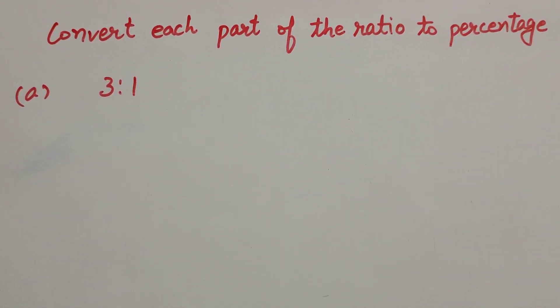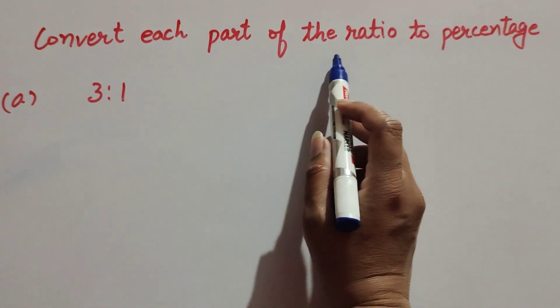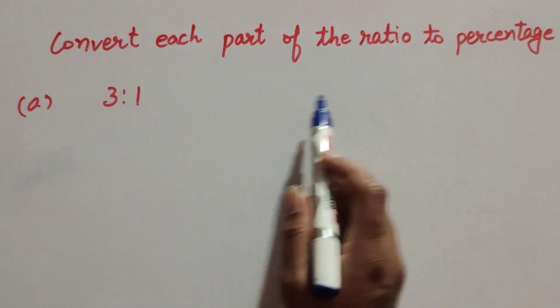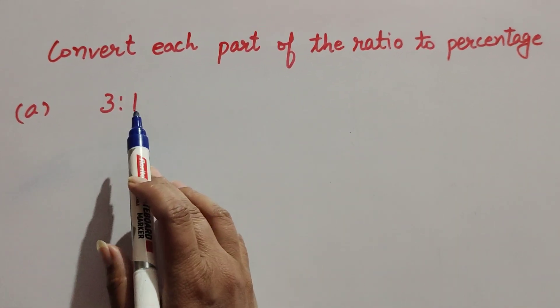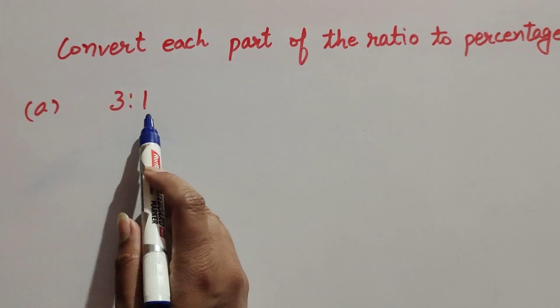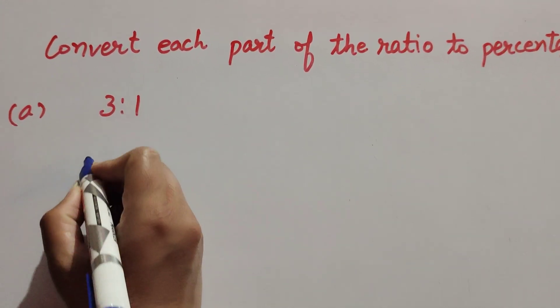Hello friends, welcome to my channel. In this video we discuss convert each part of the ratio to percentage. In this question, the given ratio is 3 ratio 1. We change each part into the percentage, so first we find the total part of ratio.